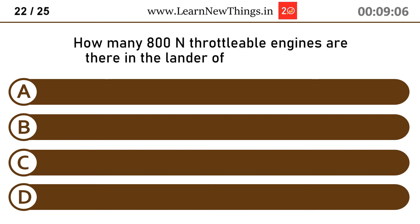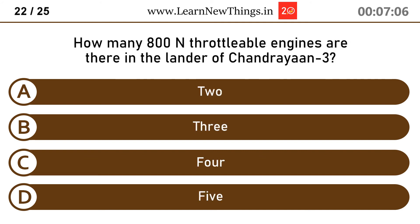How many 800N throttleable engines are there in the lander of Chandrayaan 3? 4.